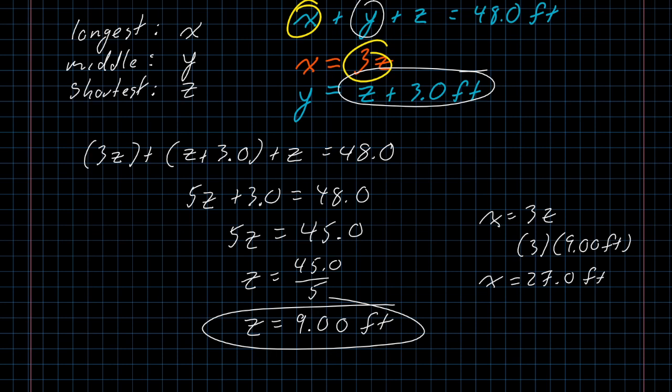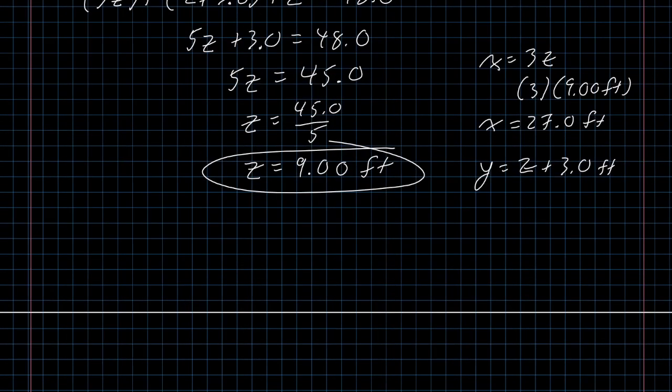And for y, y is going to be z plus 3.0 feet. So 9.00 plus 3.0. They're both approximate. In this measurement, I use the weakest precision, which is the nearest tenths in this measurement, and I get that y is 12.0 feet. So my three lengths of chain are 9.00 feet, 27.0 feet, and 12.0 feet.